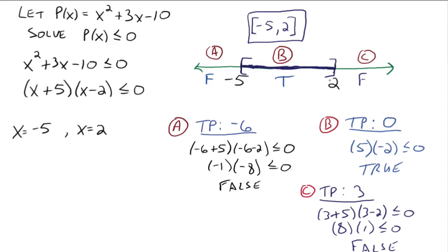The idea of test points is used well beyond solving quadratic inequalities, so make sure you understand the concept — it won't change. Find your zeros, plot them on the number line, separate the line into regions, go region by region with a test point, plug it into your inequality to determine true or false, and take the true regions. That's it. Study well, and please let me know if you have any questions.